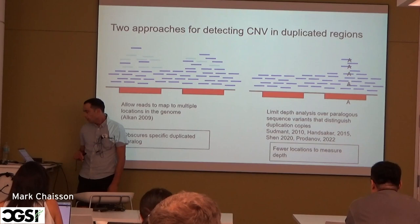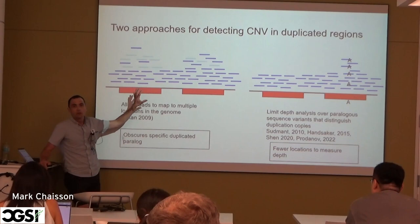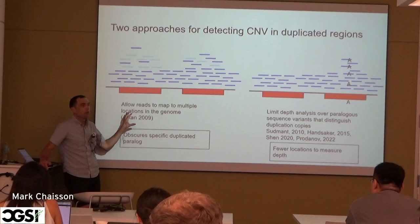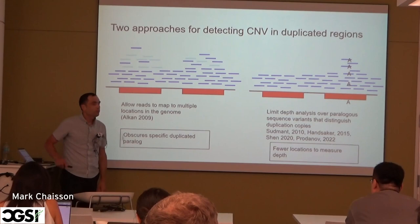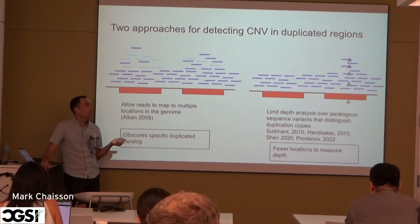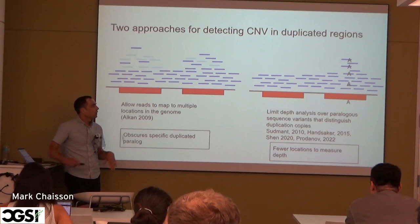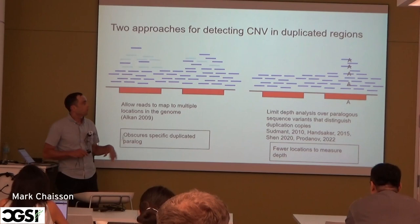Some problems with these approaches: multi-mapping of reads can obscure which particular paralog has been duplicated. And if you're relying on paralogous sequence variants, genes with few fixed paralogous sequence variants, or those with population variation, can obscure the inferences you can make with paralog-specific variant analysis.